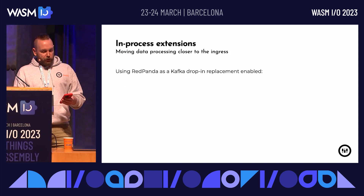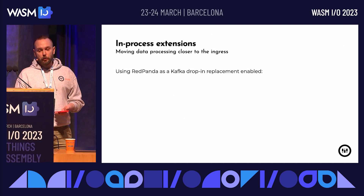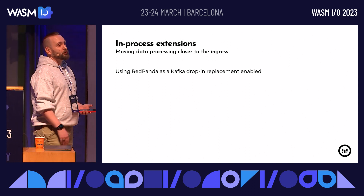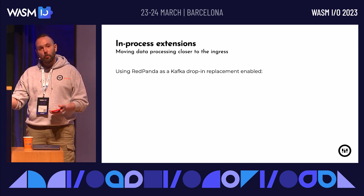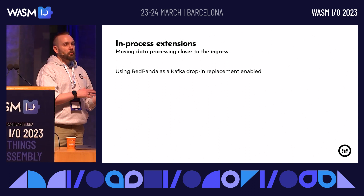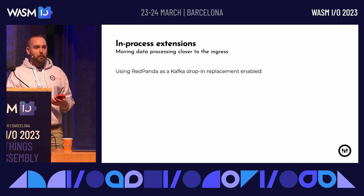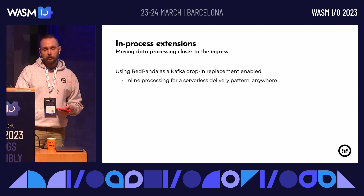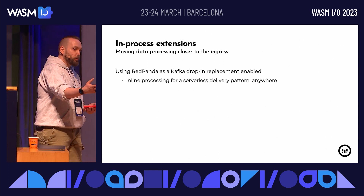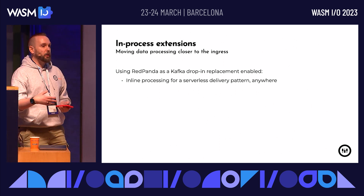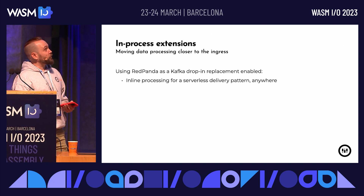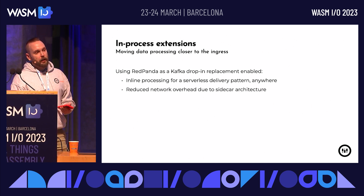The in-process extensions with Red Panda: it's Kafka-compliant and you can inject WebAssembly into the event queue, processing data before it leaves. It was like a serverless delivery platform — we'd throw a WebAssembly module at a Red Panda queue and it would process it. This allowed data scientists and data engineers to keep deploying WebAssembly transformation modules without needing a lot of different tooling. We just had to provide a lightweight API, and we built most of that in Rust.